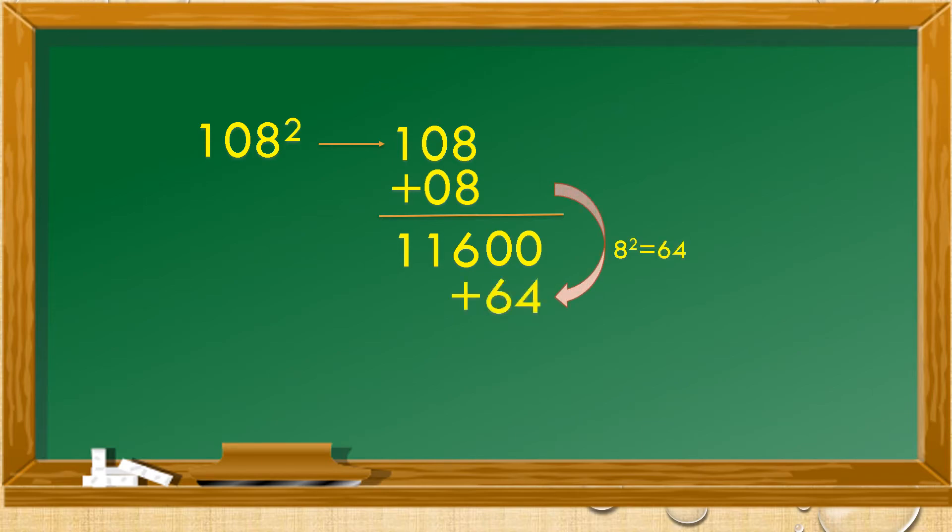So, 8 square is 64. Added to 116 followed by two zeros will give us 11664, which is the square of 108. Wanna see that again?